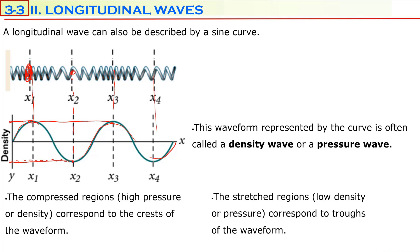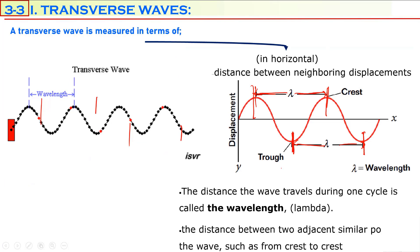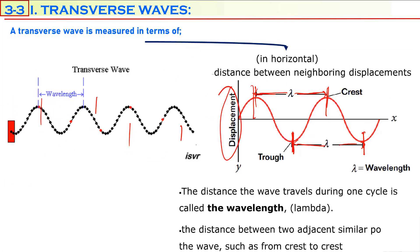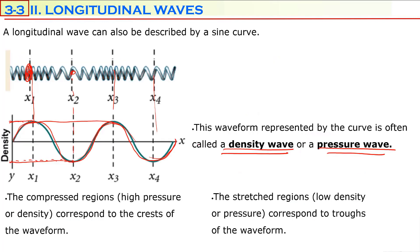Every compression corresponds to a crest of the graph, and every stretched region corresponds to a trough of the graph. This graph is a sine wave known as a density wave or pressure wave — not a displacement wave. In a transverse wave, the graph we drew was a displacement wave where the y-axis was displacement. But here, the y-axis represents pressure or density. The compressed region (high pressure) corresponds to the crest, and the stretched region (low density) corresponds to the trough.